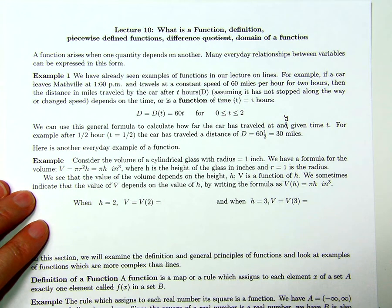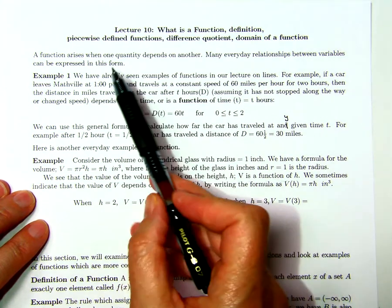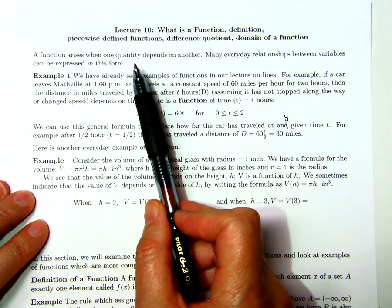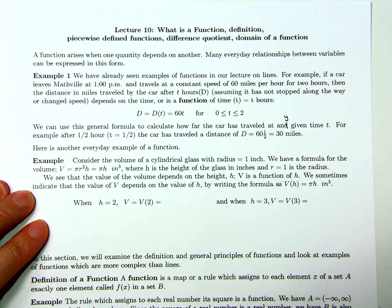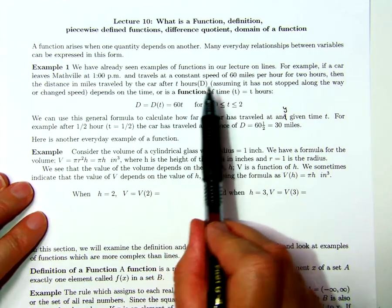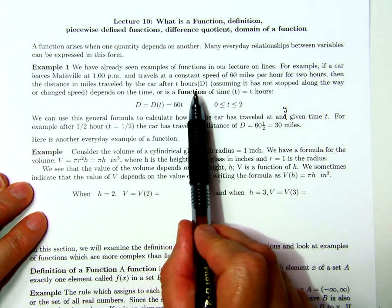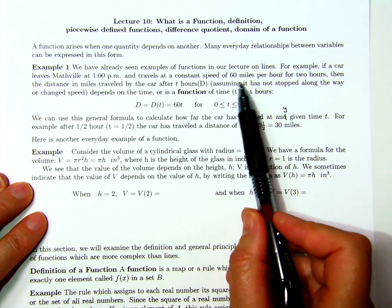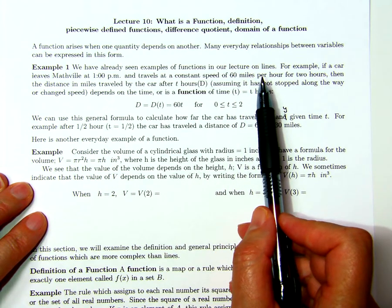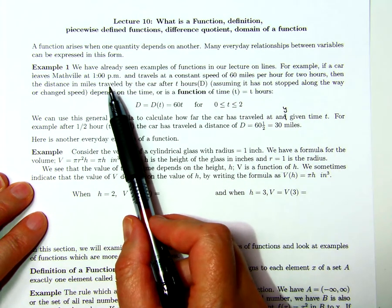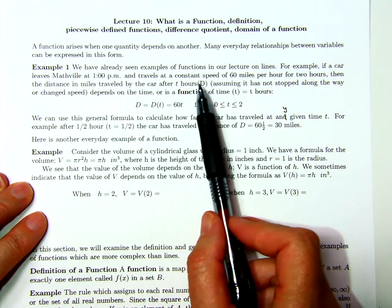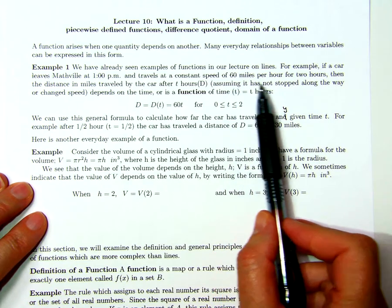A function arises when one quantity depends on another, and many everyday relationships can be expressed in this form. For example, we've already had some examples of functions in our lecture on lines. In particular, if a car leaves Mathville at 1 PM and travels at a constant speed of 60 miles per hour for two hours...